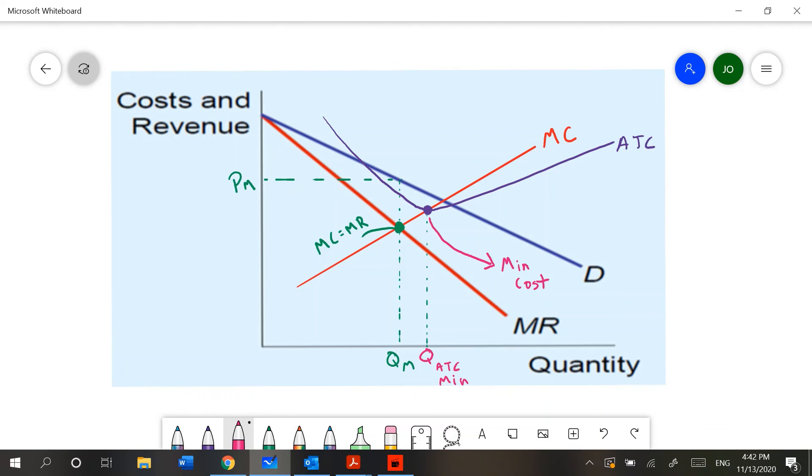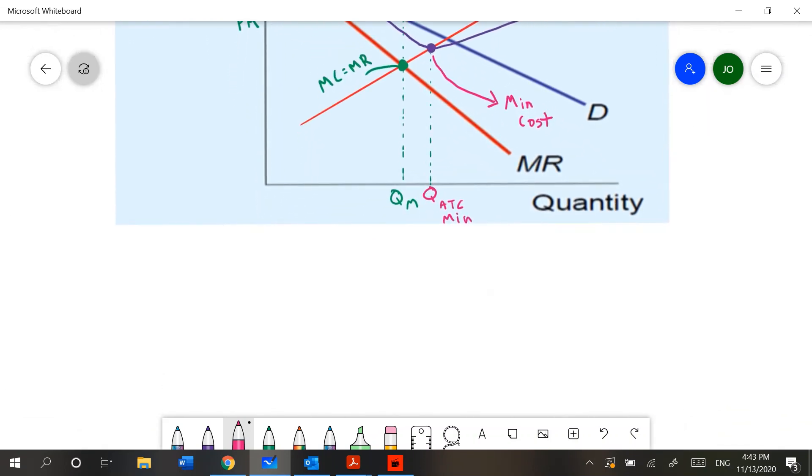However, I will label it as my quantity at ATC minimum. Meaning that when this company produces at QATC min, it is actually minimizing its costs. Now, why is this an issue? You will remember that in perfect competition, all firms make a normal profit in the long run. Meaning that in the long run, the ATC curve, the marginal cost curve, and the marginal revenue curve all intersect in the same place. Meaning that in the long run, all firms operating under perfect competition will minimize their costs. This does not occur for a monopoly. And what we see happening here is that the difference between QATC and QM can be described as excess capacity.